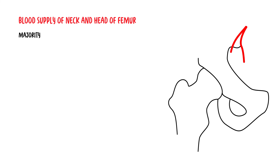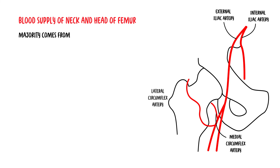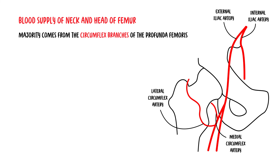Blood supply of the neck and head of the femur is more complicated. The majority of blood supply to the head and neck comes from the medial and lateral circumflex branches of the profunda femoris — the deep femoral artery. These medial and lateral circumflex femoral arteries anastomose to form a ring around the neck of the femur, with small arteries branching off to perfuse the femoral head.